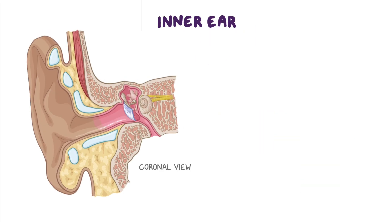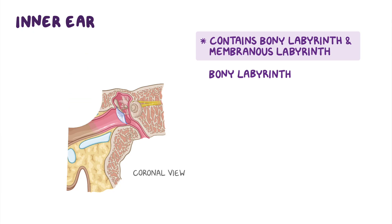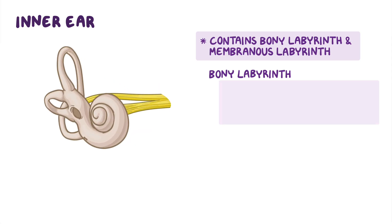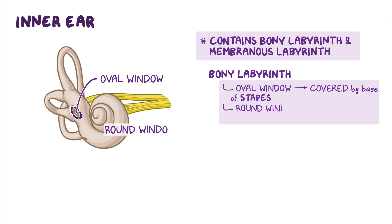Now, the inner ear contains the bony labyrinth and the membranous labyrinth. The bony labyrinth is connected to the middle ear by two windows. The oval window is found on the lateral wall of the vestibule and is covered by the base of the stapes, while the round window is found at the base of the cochlea and is covered by the secondary tympanic membrane.